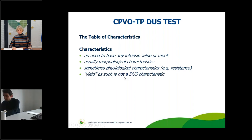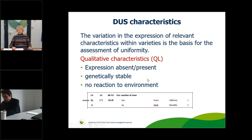The characteristics observed must, as defined at UPOV level, result from a given genotype, be consistent and repeatable, show variation between varieties, be precisely defined and recognizable, allow uniformity standards to be fulfilled, and allow stability requirements to be fulfilled. As a general remark, a characteristic for the DUS test has no need to have an intrinsic market value or merit — for example, hairiness of leaves, which has limited market value, is nevertheless a useful DUS characteristic.